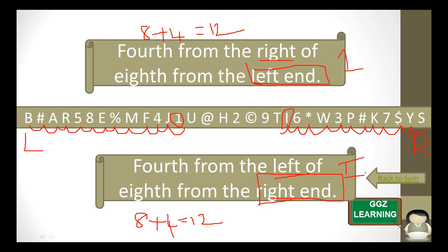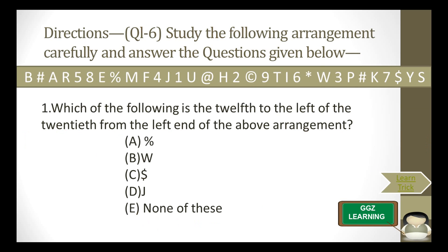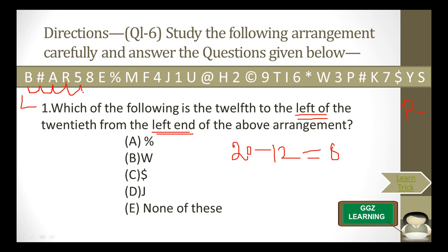Moving on to the original question: which of the following is the 12th to the left of the 20th from the left end? Both directions are the same side — left. So we subtract: 20 minus 12 equals 8. We find the 8th position from the left end: 1, 2, 3, 4, 5, 6, 7, and 8. The percentage symbol is the 8th position, so that is the answer.